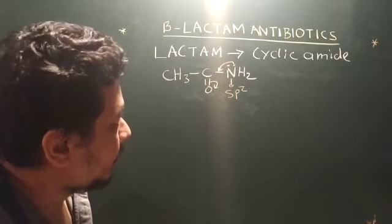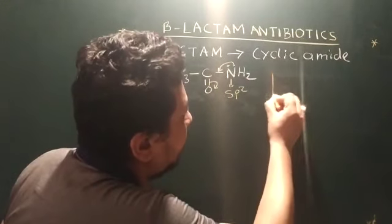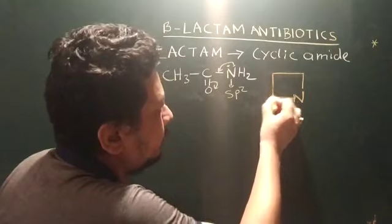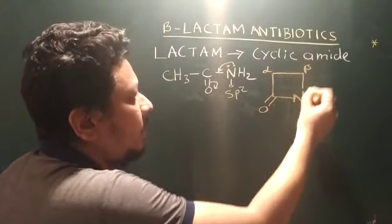But now, if we draw the lactam ring, like you have your beta-lactam, why beta? Because adjacent to carbonyl is alpha, and then beta, beta-lactam.